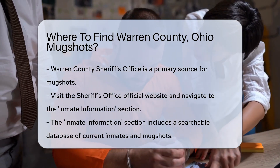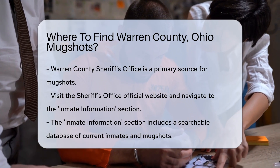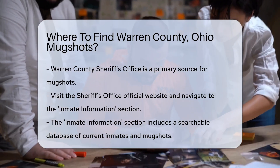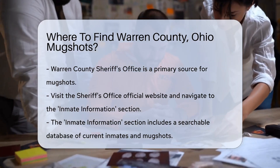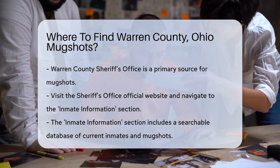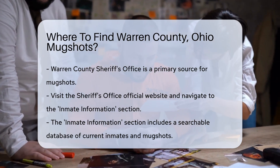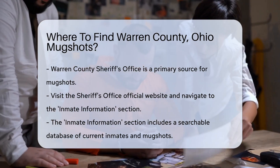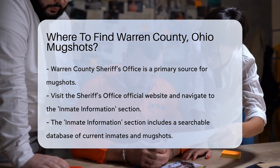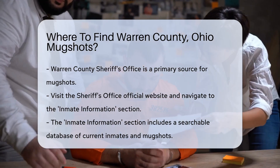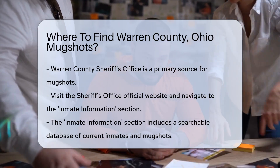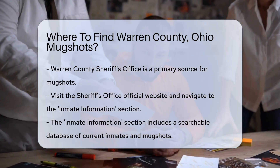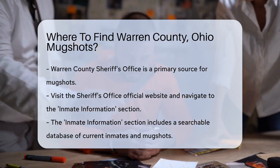First, Warren County Sheriff's Office is a primary source. They maintain records of arrests and mugshots. You can visit their official website and navigate to the Inmate Information section. This section often includes a searchable database of current inmates, including mugshots.